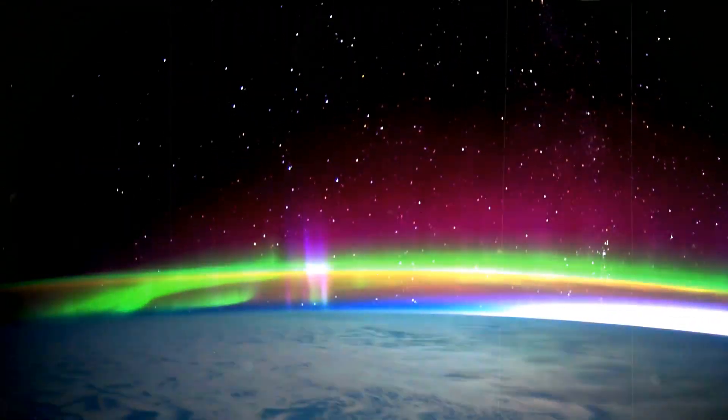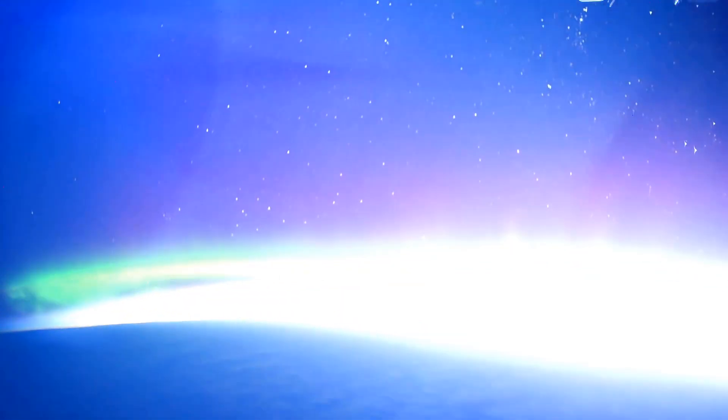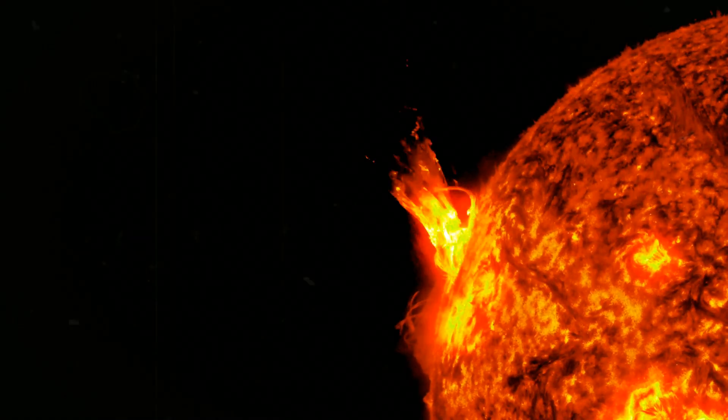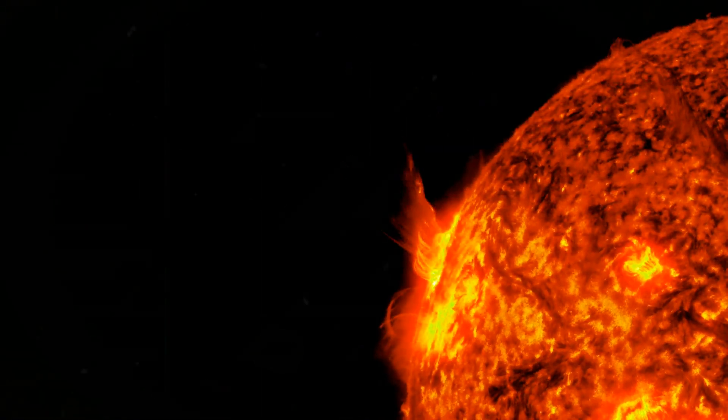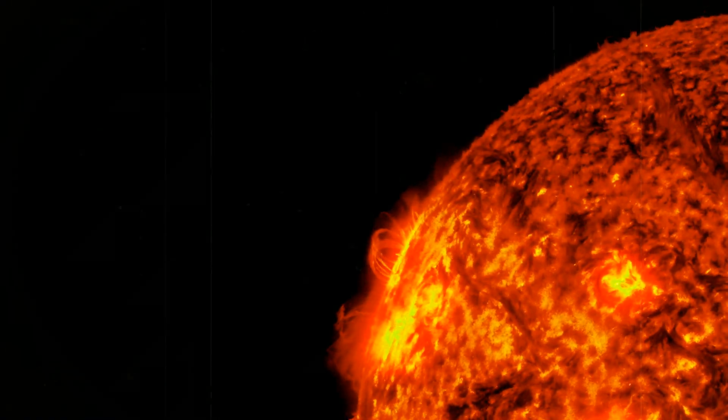Most of the time this means nothing more than auroras dancing in the high atmosphere. But in rare cases, the interaction of cometary plasma with solar storms can distort magnetic fields enough to cause unexpected effects.